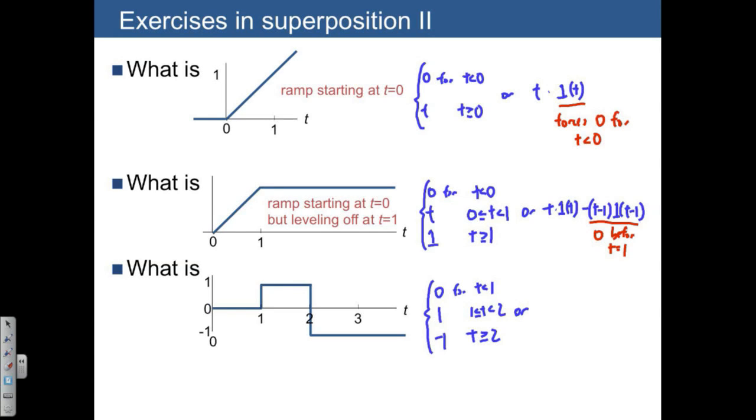Another way of writing this is we have a unit step that's been shifted to the right by 1 minus twice a unit step that's been shifted to the right by 2. So those are two alternative ways to describe these functions.